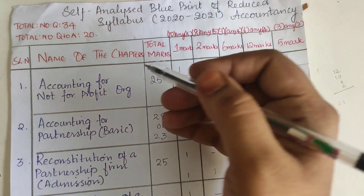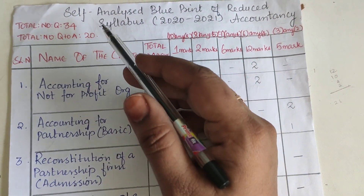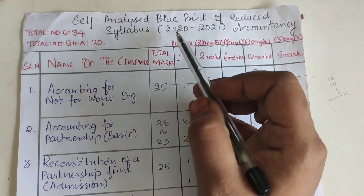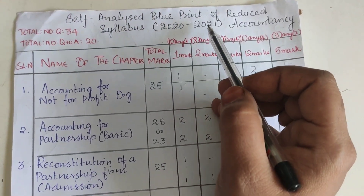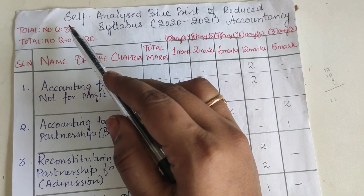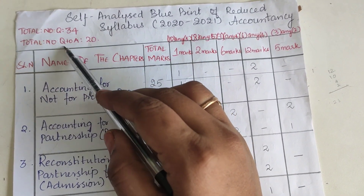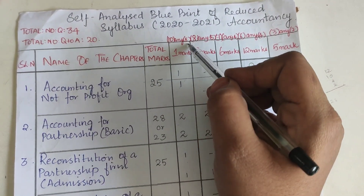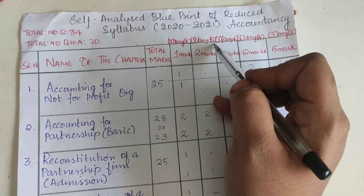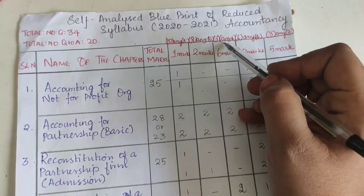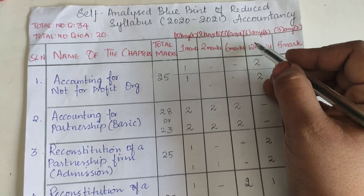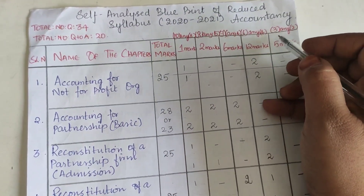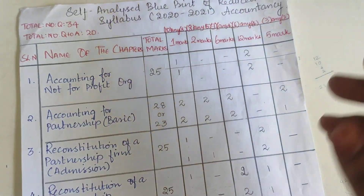Welcome to Quest for Knowledge. I'm going to share with you a self-analyzed blueprint of accountancy for the reduced syllabus of 2020 to 2021. The total number of questions asked is 34, and we need to answer 20. For 1-mark questions, 10 will be given and 8 need to be written. For 2-mark, 8 will be given and 5 need to be written. For 6-mark, 7 will be given and 4 need to be written. For 12-mark, 6 will be given and any 4 need to be written. For practical questions, 3 will be asked and 2 need to be written.